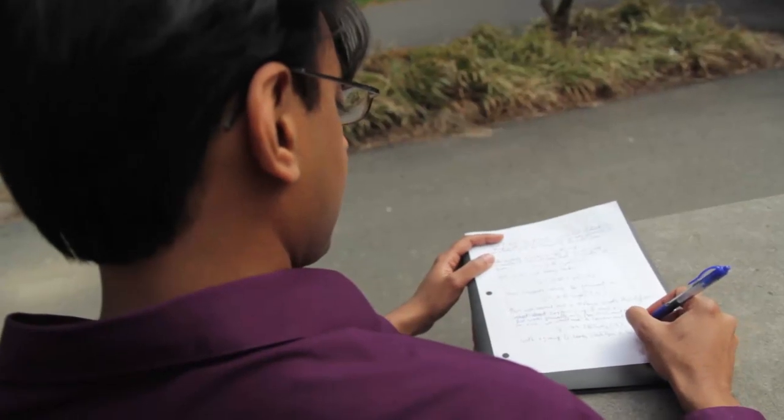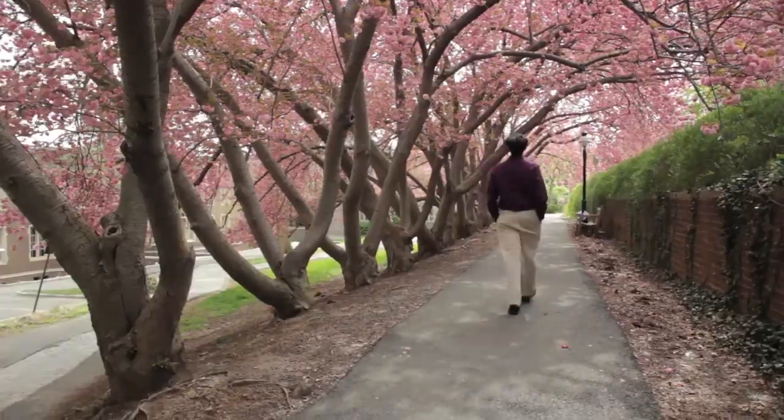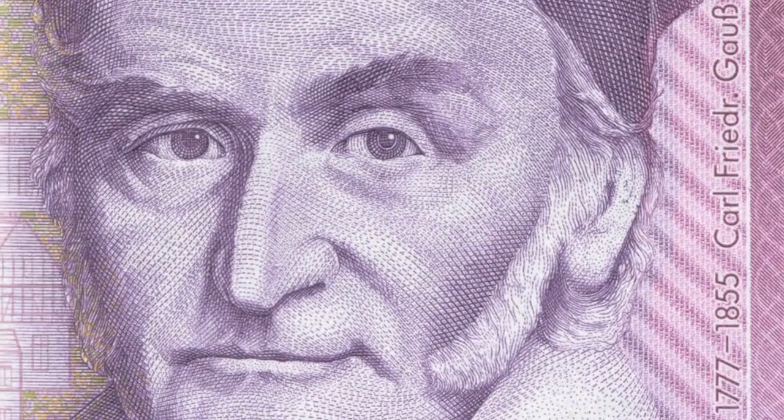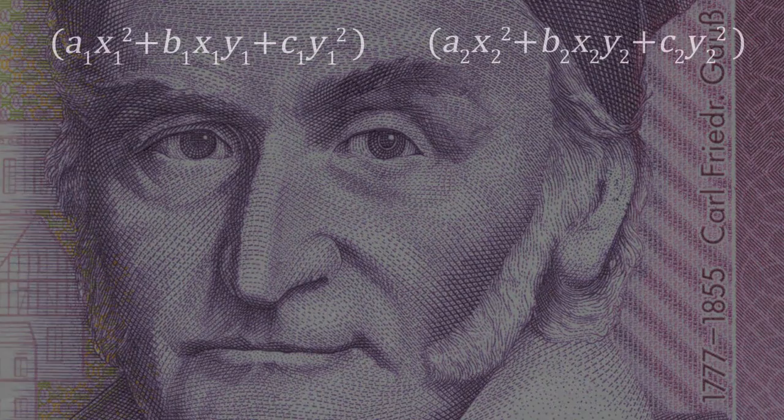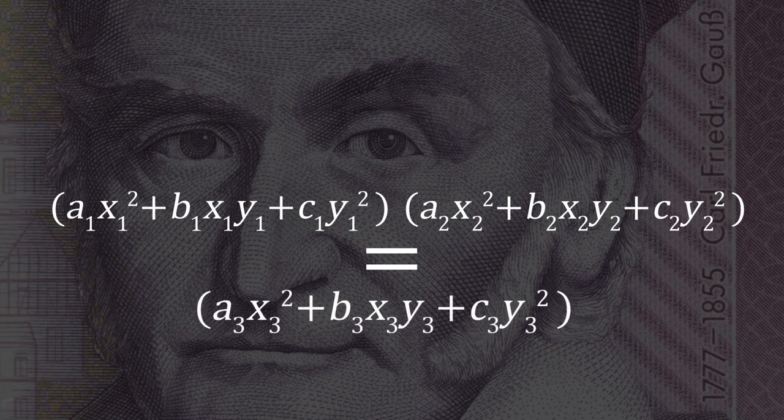One of the most exciting moments of discovery for me occurred when I was a graduate student at Princeton. Those days I had been thinking about Gauss composition. So Gauss composition is a method by which one can take two quadratic expressions in two variables and combine them to produce a third such quadratic expression.